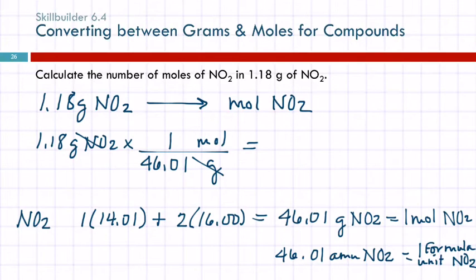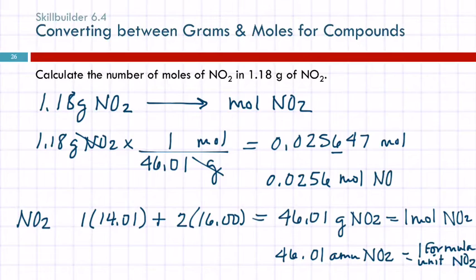1.18 divided by 46.01. I'm thinking about sig figs as I'm writing this down. Here I've got three sig figs. Here I've got four. I need to keep three. Those leading zeros don't count. I'm going to write down a couple extras. And the unit should be moles. Now I'm going to round 0.0256 moles of NO2. Any questions?